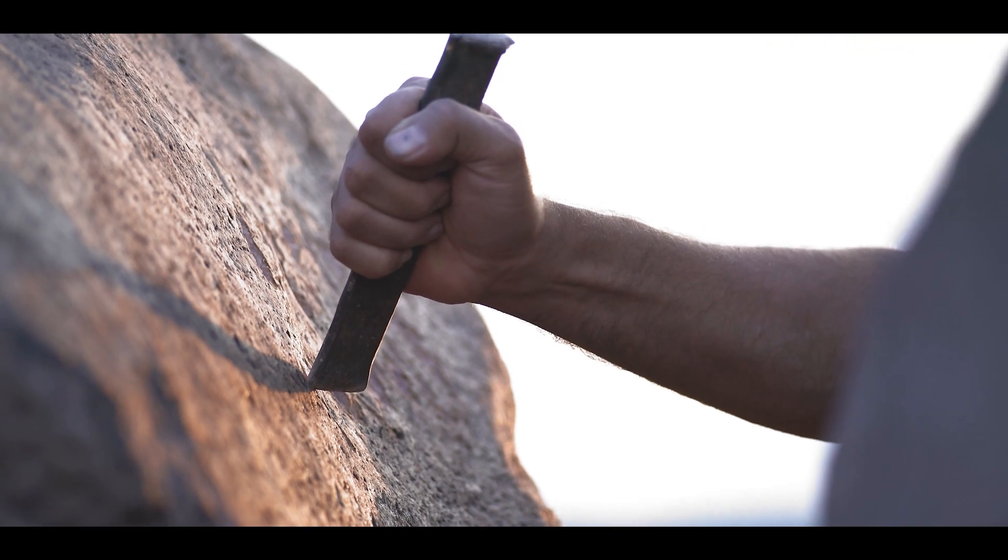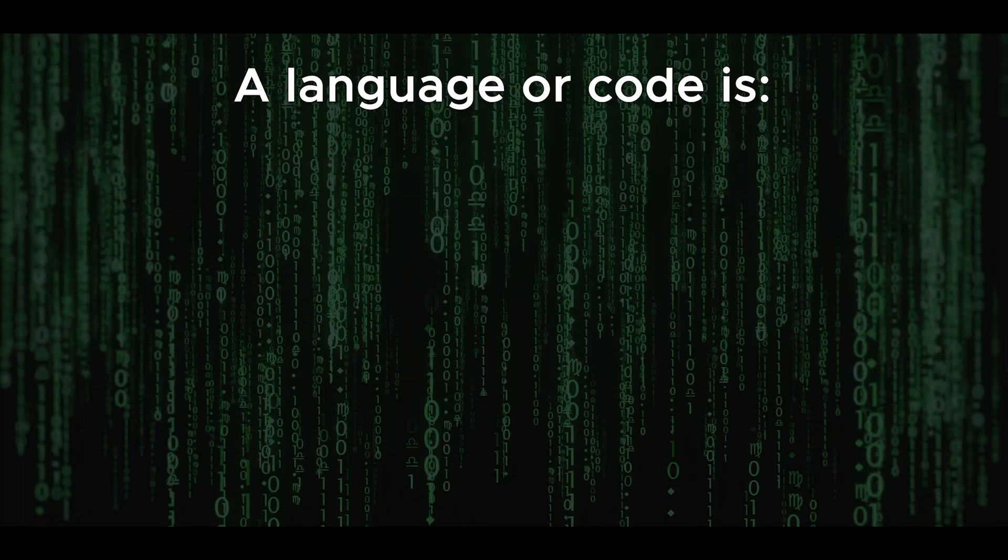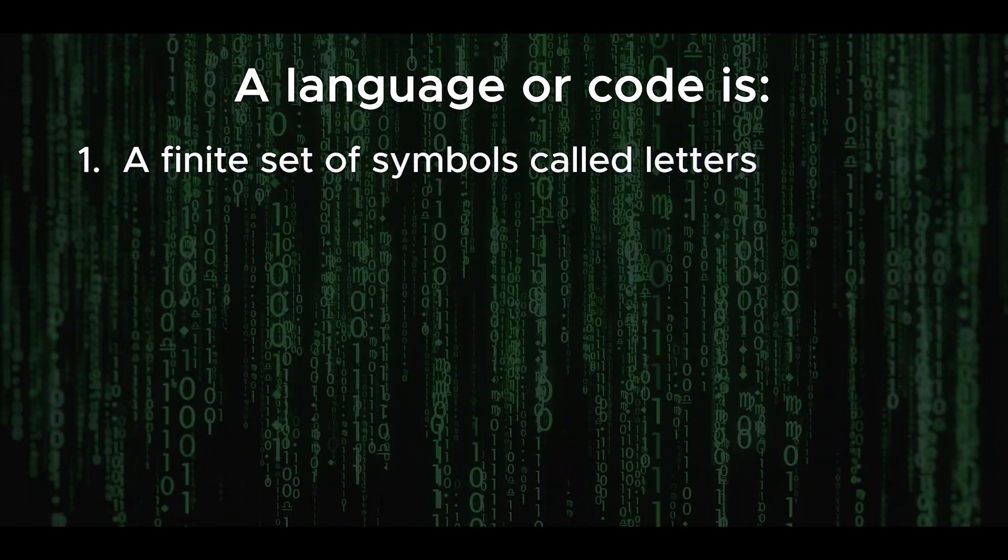So here are some of the basics of our cosmological framework. A language or a code is a finite set of symbols called letters.